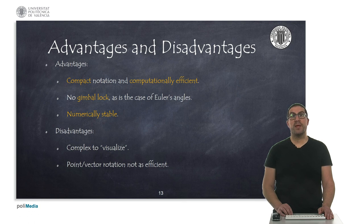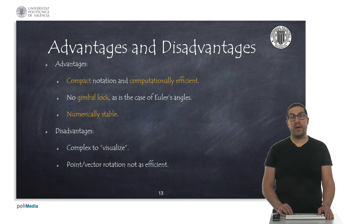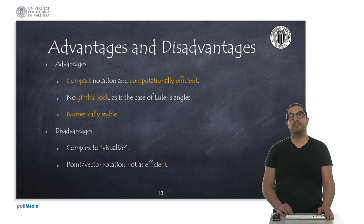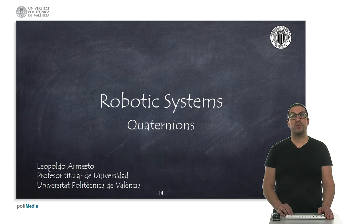Therefore, as conclusions, we can say that quaternion notation is more compact and computationally more efficient. They do not present the gimbal lock problem as in the case of Euler angles, and they are numerically quite stable. As disadvantages, quaternions are more complex to visualize, and the rotation of a point could be slightly more expensive compared to the rotation matrix representation. In this video, we have introduced quaternions and seen some of their main properties and operators, as well as analyzed the advantages and disadvantages of their use compared to rotation matrices. Thank you very much.